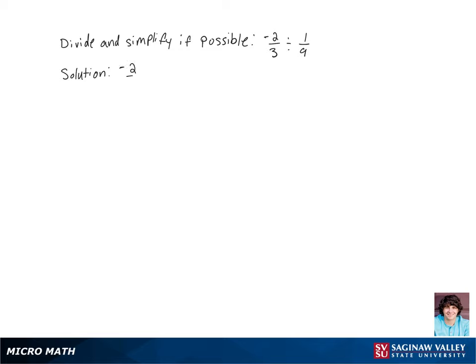Let's divide and simplify negative two-thirds divided by one-ninth. When we're dividing by fractions, that's the same as multiplying by the reciprocal of the fraction.